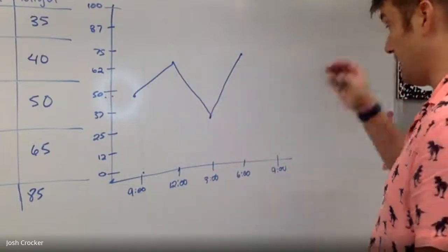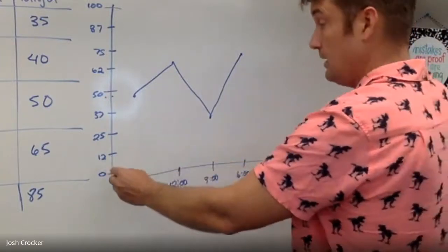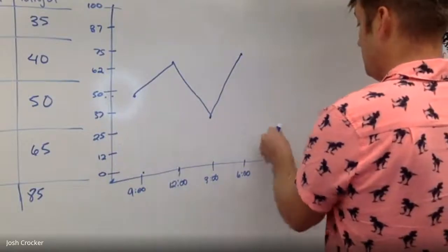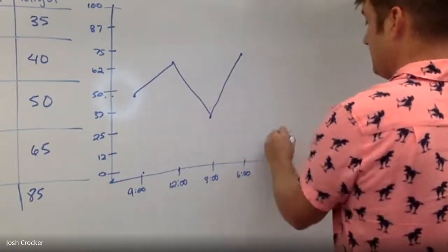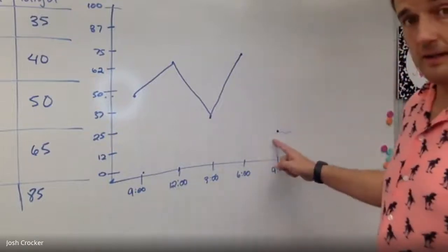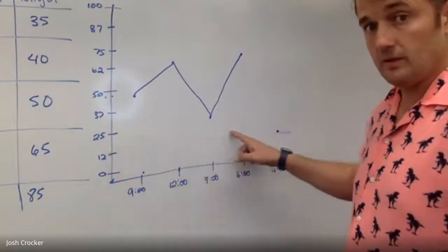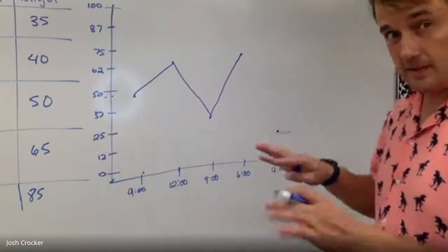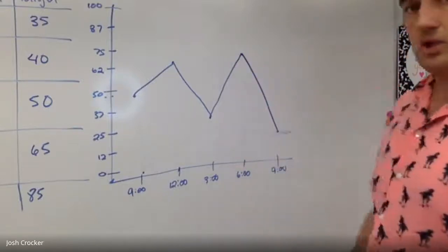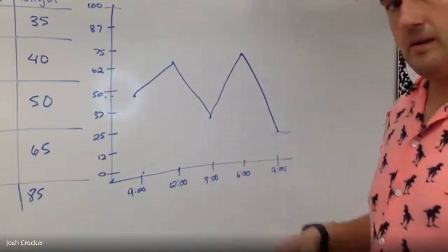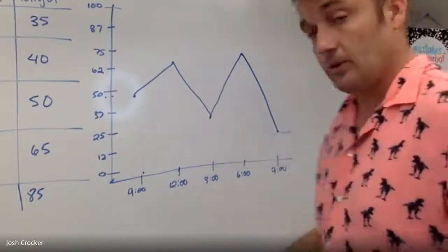And then at 9pm, it falls way off to 15. I don't have a 15, but I have a 12. It's a little bit more. So that's my dot. It's above 9 o'clock. It's across from where I think 15 would be. 15 is a little more than 12. So that's where I think it should be. And then I connect it up. So this shows me how the cars in the parking lot just at Walmart changed over the course of a day.